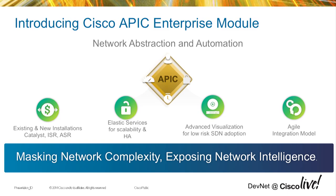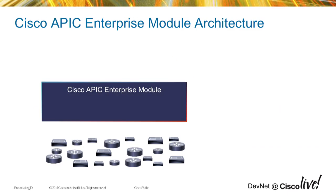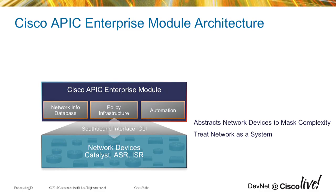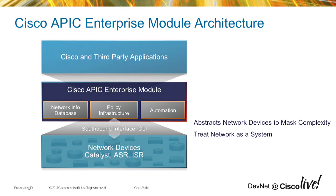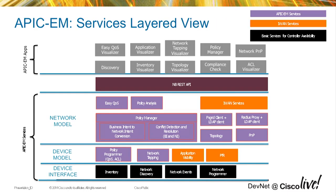What APIC EM is really about is trying to abstract, simplify, and automate campus and WAN environments. The model is fairly simple: you've got a controller that treats the network as a system. Many customers have lots of devices, and things like quality of service are very difficult to deploy across a large network because you need to make lots of changes to individual devices and have those changes synchronized. The controller gives you a single point to interact with the network as a system rather than a collection of individual devices.